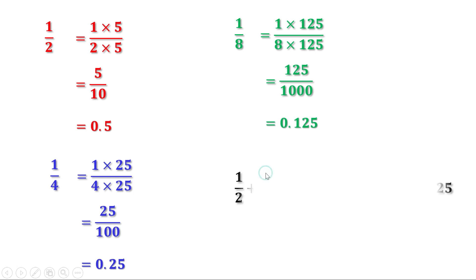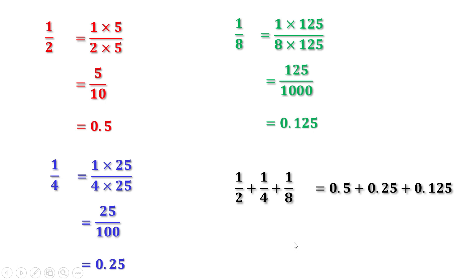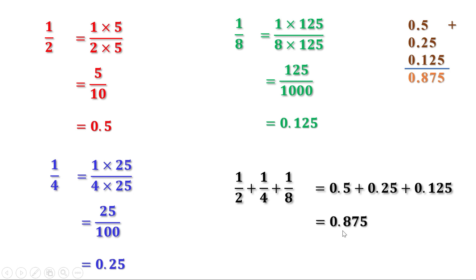Therefore, 1 by 2 plus 1 by 4 plus 1 by 8 is 0.5 plus 0.25 plus 0.125. Let us add it together: 5 plus 2 is 7 plus 1 is 8, then 5 plus 2 is 7 and 5. So 1 by 2 plus 1 by 4 plus 1 by 8 is 0.875.